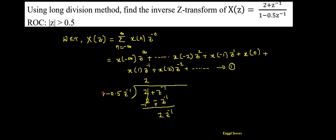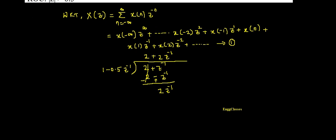Now to cancel 2z⁻¹, multiply 1 by 2z⁻¹. This gives 2z⁻¹ from the leading term, and 2z⁻¹ × (-0.5z⁻¹) = -z⁻².